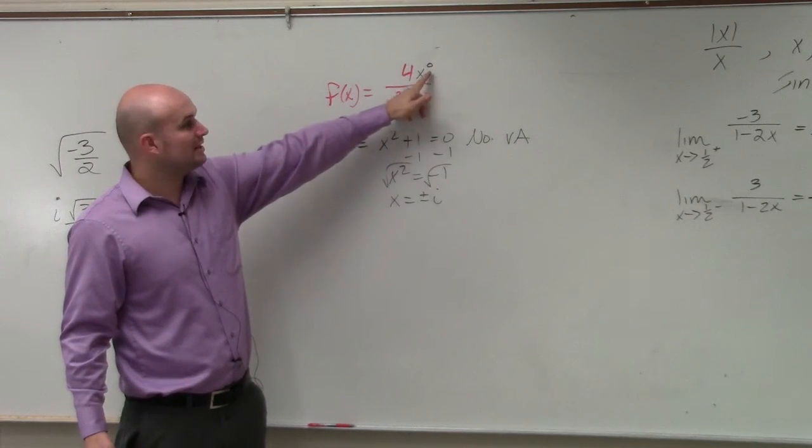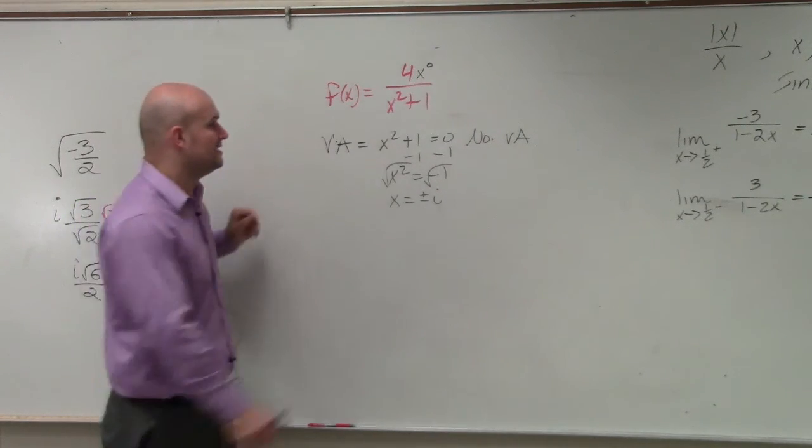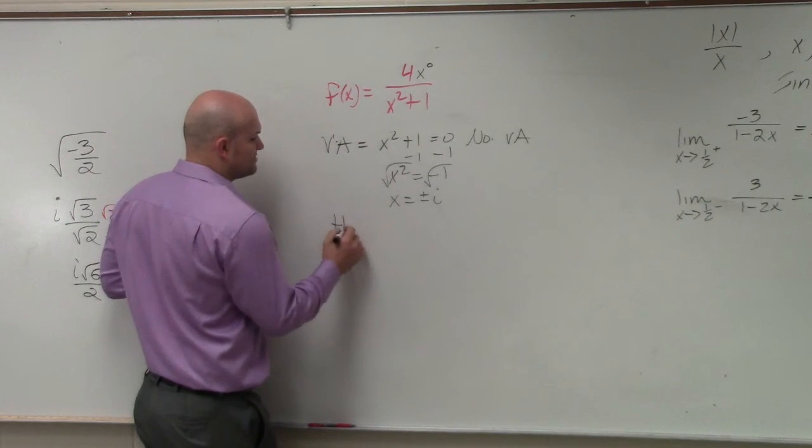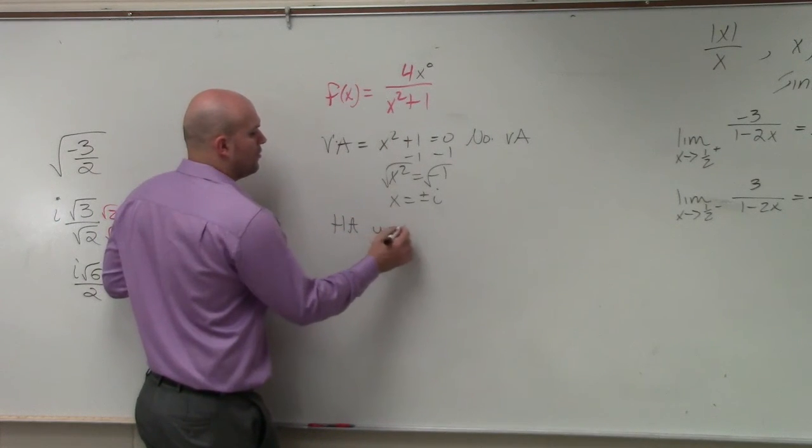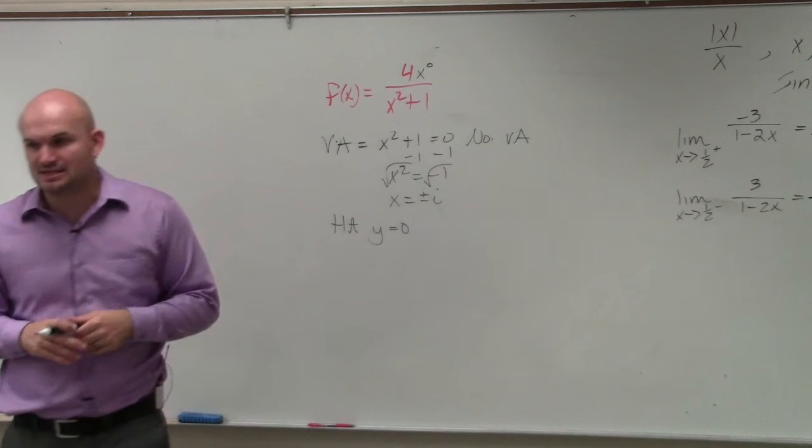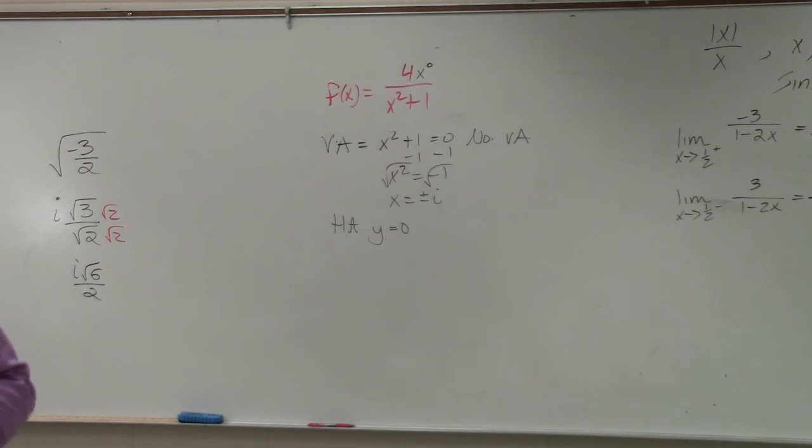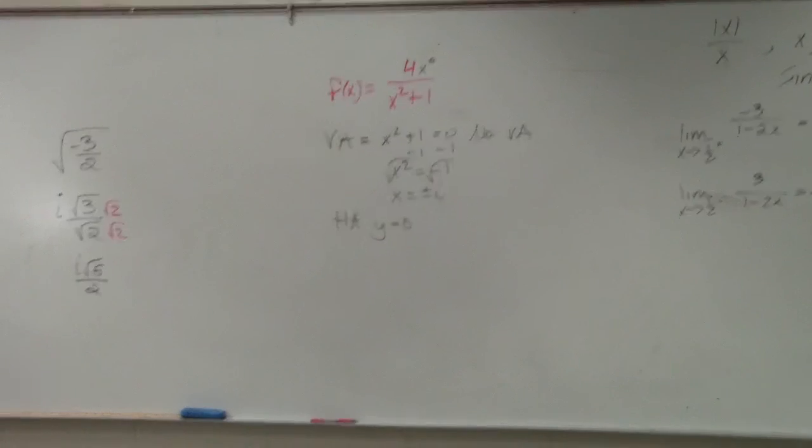Since the degree in the numerator is greater than the degree in the denominator, we know that the horizontal asymptote is y equals 0. That was in your notes last class period. So you don't really need to do math. You just need to know the horizontal asymptote test.